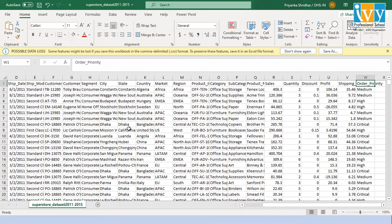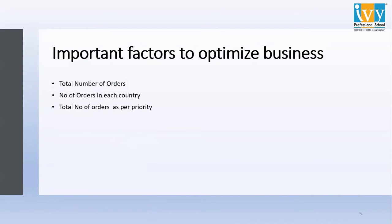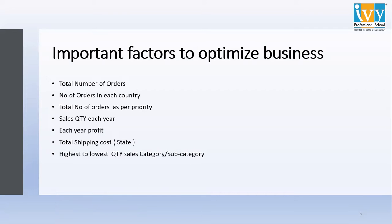I have analyzed this data. The important factors to optimize business that we'll analyze include: the total number of orders, number of orders in each country, total number of orders as per priority, sales quantity each year, each year's profit, total shipping cost state-wise, and highest to lowest sales quantity with product category and subcategory.